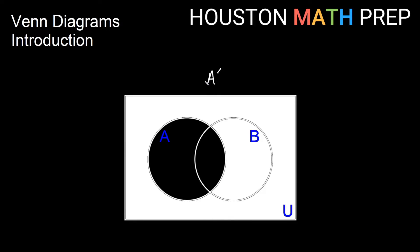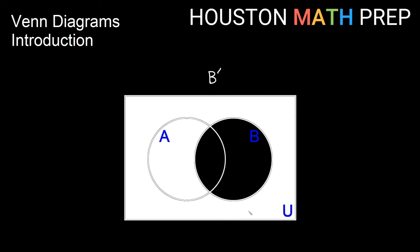Here we have A complement. So remember, complement means not in that set. So all of the things not in set A would be anything in the Venn diagram that is outside of circle A. And then obviously, if we had B complement, that would be all of the regions that are not inside of circle B.